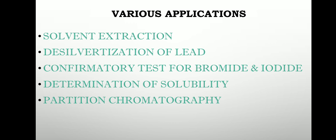Second is desilverization of lead. If you want to separate silver from lead, zinc is added, because silver is more soluble in zinc than in lead. So if you have an alloy or ore of silver and lead, you melt the alloy and add melted zinc into it. The silver will preferentially move into the zinc layer due to higher distribution coefficient towards zinc.